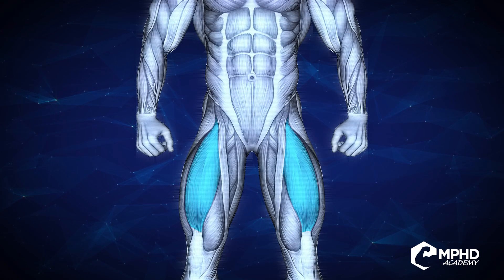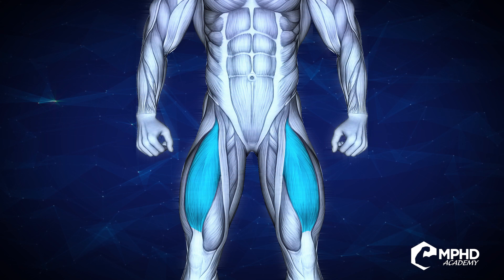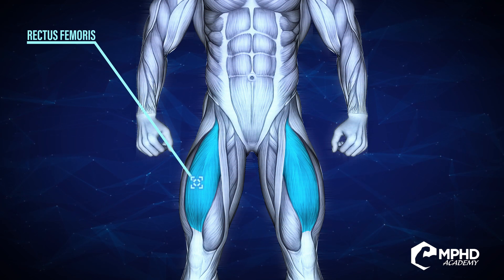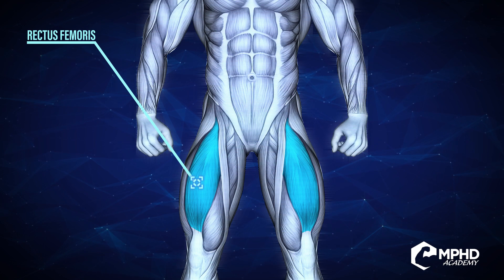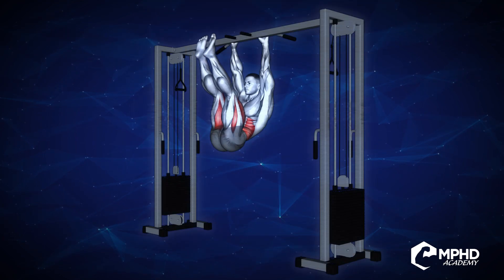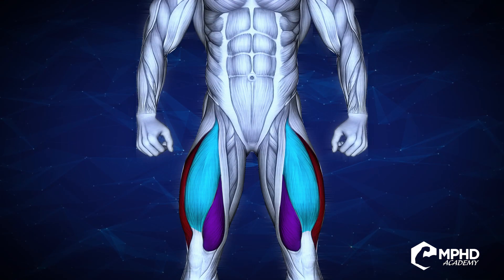Finally, we have the middle aspect of the quads on the upper thigh, which we call the rectus femoris. It extends the leg and also flexes the hip, as in lunges and hanging leg raises.